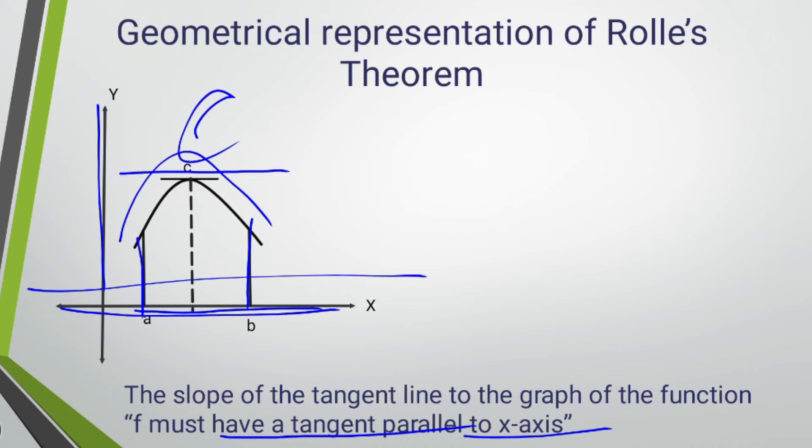The tangent parallel to x-axis means that the slope of the tangent at point c is 0. In other words, any real-valued differentiable function that attains two equal values must have at least one stationary point somewhere between a and b, that is a point where the first derivative is 0.